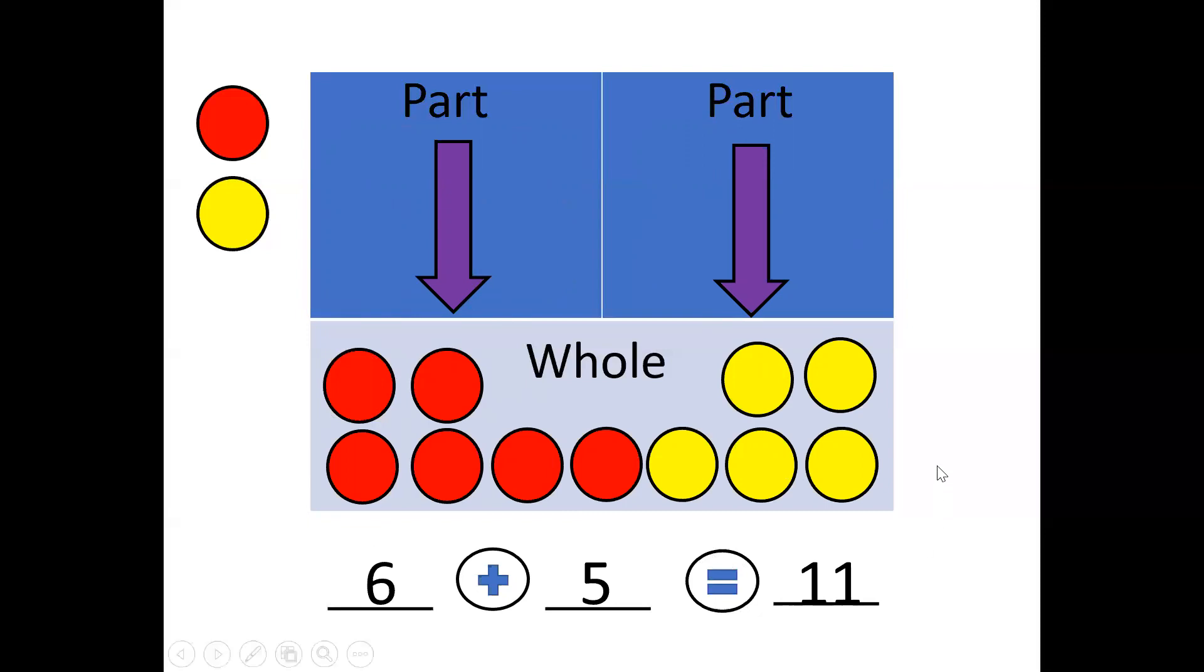Okay. So we've worked on part, part, whole. I showed you how you need to build one part to match your first number. You need to build one part to match your second number or addend in your equation. Then remember that our job is going to be to physically pull those tiles down to our whole block, count them all together, red and yellow, in order to get our sum.